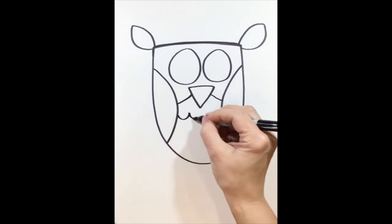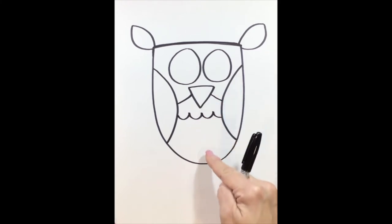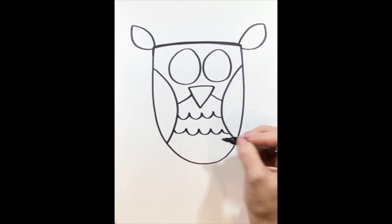Next, we're going to make the feathers of the owl by using scalloped lines on the belly part of our owl. So start on one side and you're going to create those scalloped lines the whole way across the belly.